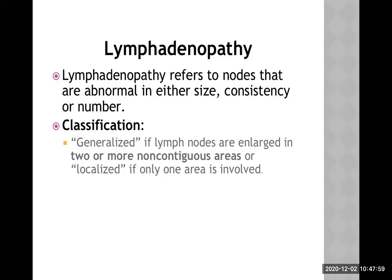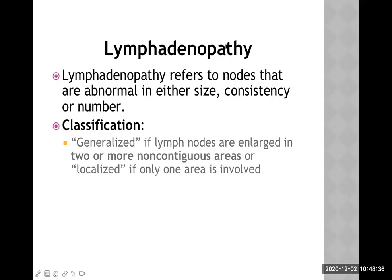Let's start with the definition. Lymphadenopathy refers to nodes that are abnormal in either size, consistency, or number. The most important point here is size — lymphadenopathy means lymph nodes are usually larger in size. When we palpate those lymph nodes, sometimes they are hard, sometimes they are soft, sometimes of normal consistency. Consistency means how they feel when we palpate them. If there are multiple lymph nodes enlarged in size, this is always abnormal.